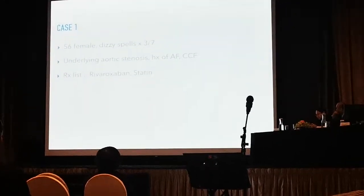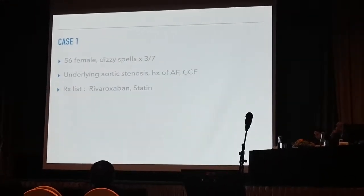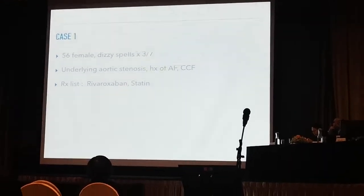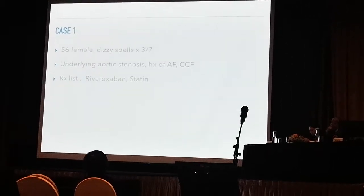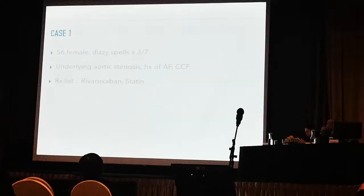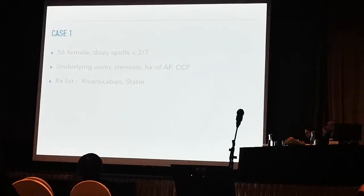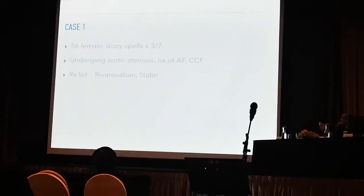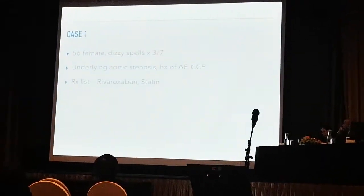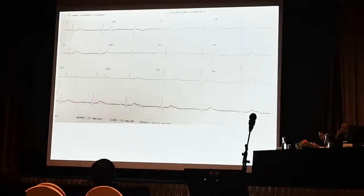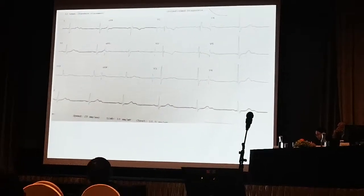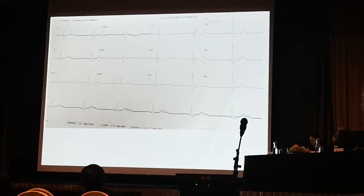Coming back to the main story — I have two cases to share with you today, and these are all real cases. The first case is a 56-year-old woman who came to the clinic one day complaining of dizzy spells for the past three days, so it tells us it's actually acute, nothing chronic. She has underlying aortic stenosis, had AF before and then reverted to sinus, and also had a history of heart failure. Medication-wise: no beta blocker, no calcium channel blocker, just a bit of blood thinner and a statin. Now this is her ECG — let's take a moment to have a look at it.